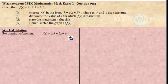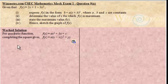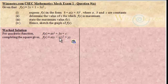Upon completing the square, what we are going to find is that f of x is going to be equal to a into x minus xt squared plus yt. The xt and yt can be expressed in terms of a, b and c. This will be the form, and the xt and yt can be expressed in terms of a, b and c.